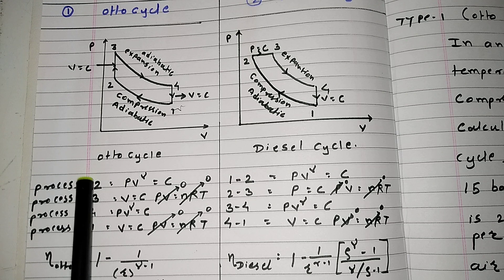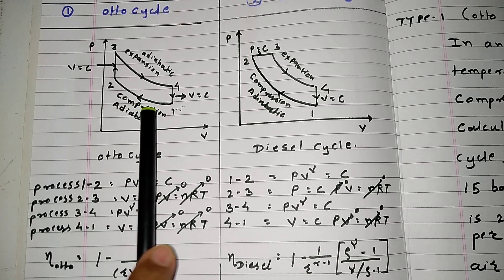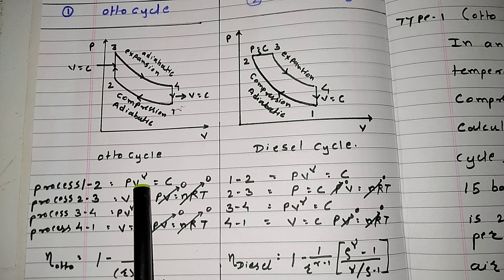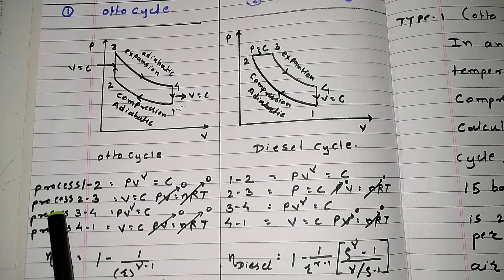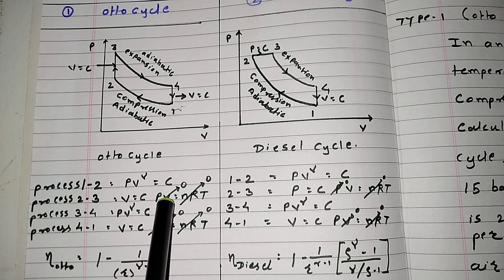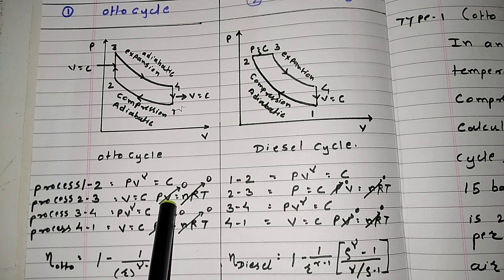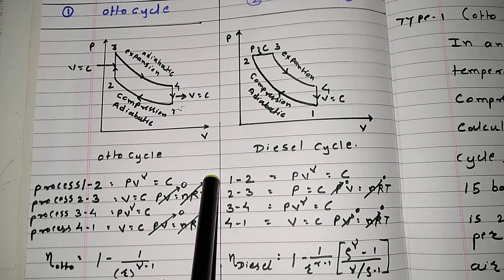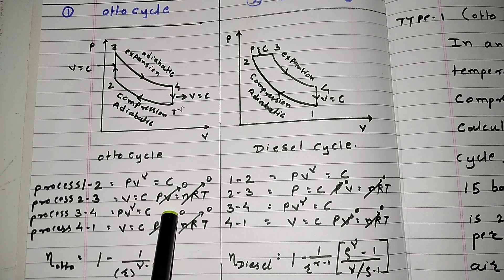For the Otto cycle formulas: process 1 to 2 uses the adiabatic compression formula PV raised to gamma equals constant. Process 2 to 3 volume is constant, so by the ideal gas equation PV = NRT, volume and NR become zero, so P is proportional to T. Process 3 to 4: PV raised to gamma equals constant.